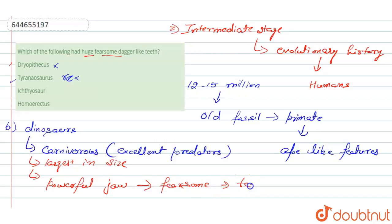Apart from this, this dinosaur, this Tyrannosaurus rex, is a bipedal organism. So here the huge fearsome dagger-like teeth is present in the Tyrannosaurus rex, so this option is correct.